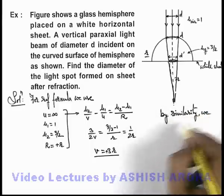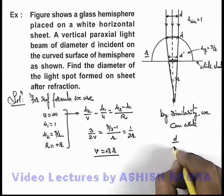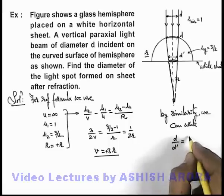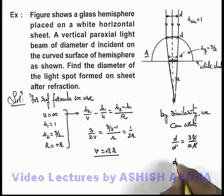We can write in this situation d/d' = 3R/2R. Here R gets cancelled out, and the value of d' we are getting is 2d/3.